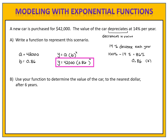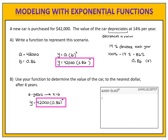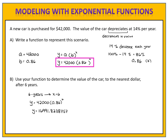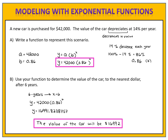In part b, we are asked to determine the value of the car after 6 years. Six years means x is 6, so we substitute 6 in place of x in the function and evaluate 42,000 times 0.86 to the 6th power on our calculator. We round to the nearest dollar as directed, so the value of the car is $16,992.